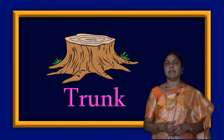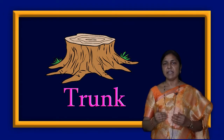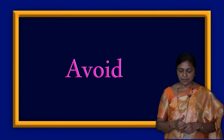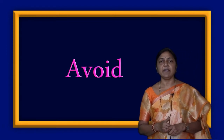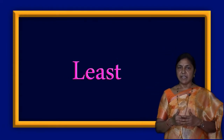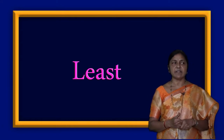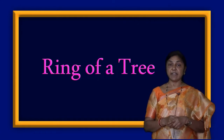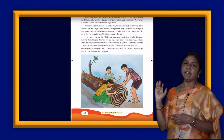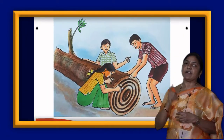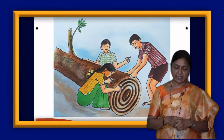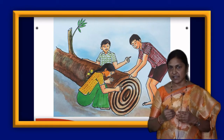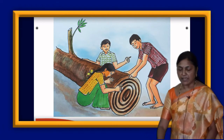First word: trunk — the main woody stem of a tree. Next: avoid — keep away from. And least — smallest part or amount. Next: ring of a tree. If you see the picture, you can count the rings of a tree. And indicates — point out or show. These are the words we picked from the text.